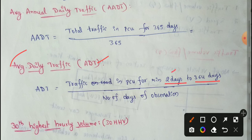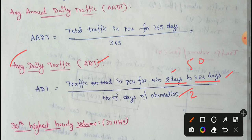So the minimum value is 2 days. ADT equals traffic in passenger car units for a minimum of 2 days up to 365 days, divided by the number of days observed. For example, traffic in PCU for 50 days divided by 50 days gives the average daily traffic.